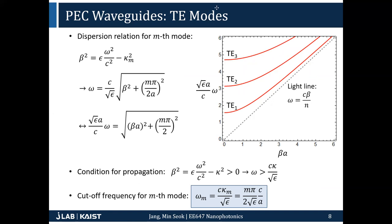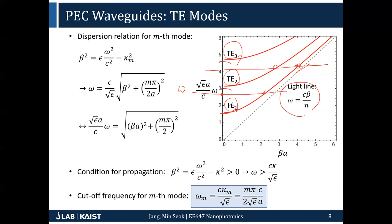We drew the dispersion relation of the PEC waveguide. One thing we immediately notice is that all waveguide modes lie on the left side of the light line. There are cutoff frequencies — at a certain frequency, only one mode is allowed; at higher frequency, two modes, and so on. The frequency where a mode disappears is called mode cutoff.